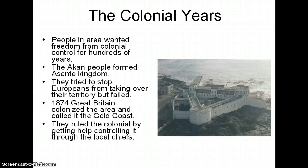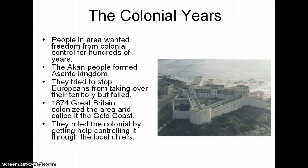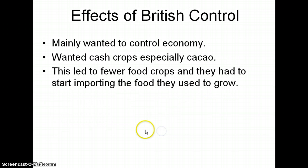In the colonial years, the people in the area wanted freedom from colonial control for hundreds of years. The Akan people were one of the original groups; they formed the Asante Kingdom and tried to stop Europeans from taking over their territory, but they failed. This was all part of an attempt to take over this area that was rich in gold fields and to get around the trans-Saharan gold trade. So in 1874, Great Britain colonized the area and called it the Gold Coast. They ruled the colony by getting help from local chiefs, and they had a big fort in Ghana.